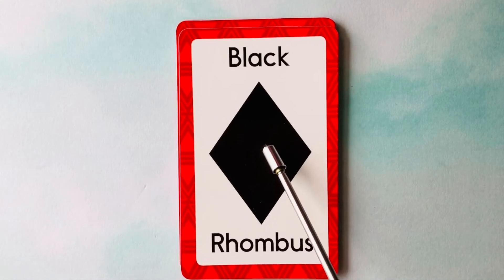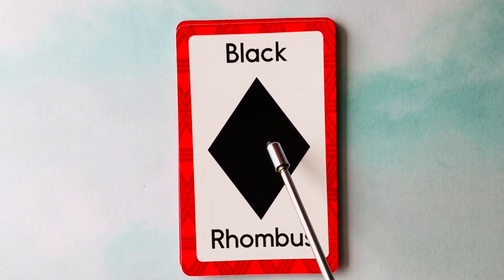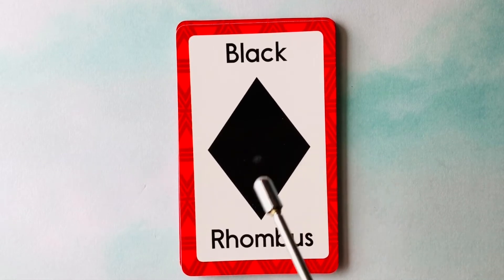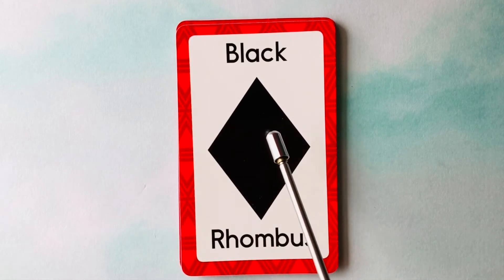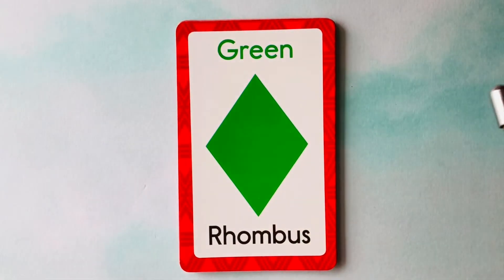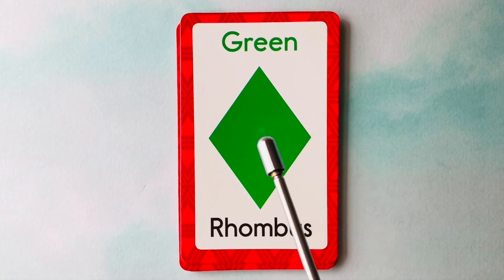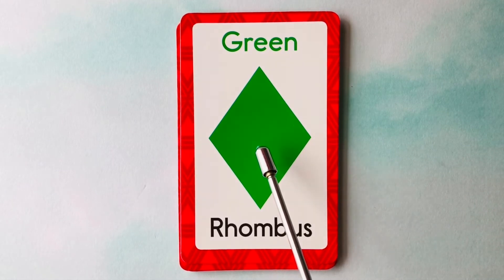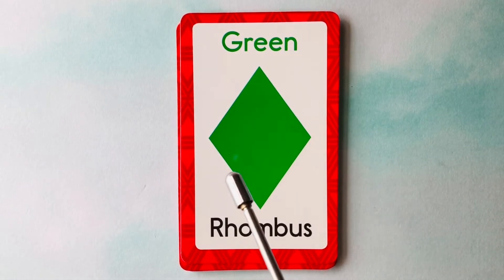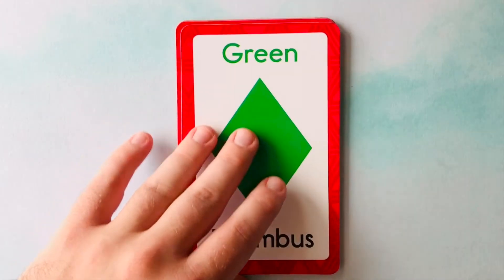This is a rhombus. What color is this rhombus? It's a black rhombus. This is also a rhombus. What color is this rhombus? It's a green rhombus. This is a green rhombus.